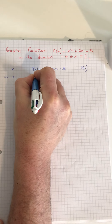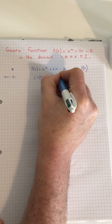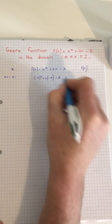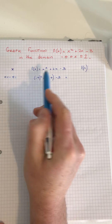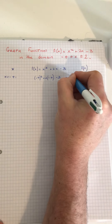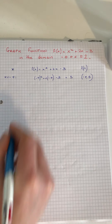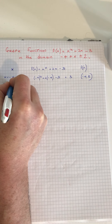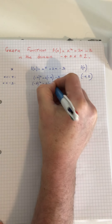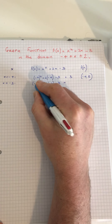When I substitute in x = -4, I get (-4)² + 2×(-4) - 3. Use your calculator: (-4)² is 16, take away 8, take away 3 is 5. So the point is (-4, 5). When x is -3: (-3)² + 2×(-3) - 3 gives us 9 take 6 is 3, take 3 is 0.